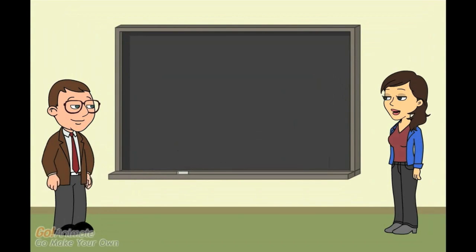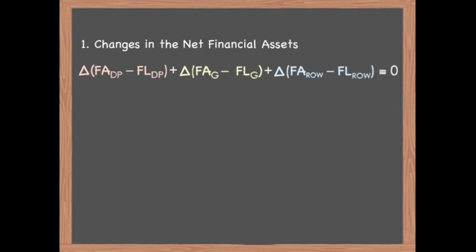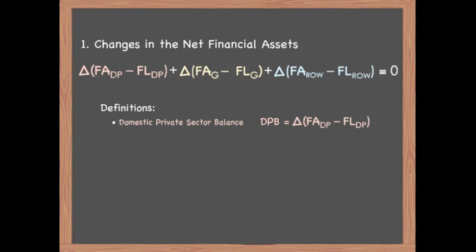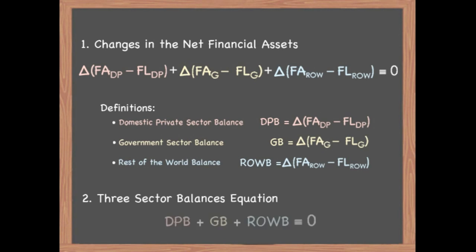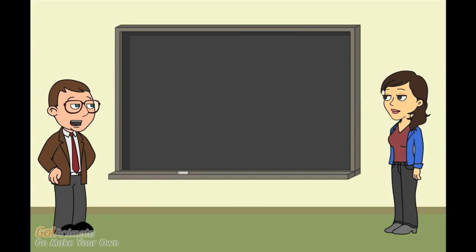So now we are looking at the changes in the net financial assets of the three sectors. We can simplify the equation by making a few definitions. The domestic private sector balance, DPB, is the change in the net financial assets of the domestic private sector. The rest of the world balance, ROWB, is the change in the net financial assets of the foreign sector. We can then rewrite the equation in a more concise form. So now we are talking about whether a sector is running a balanced budget, a surplus, or a deficit.